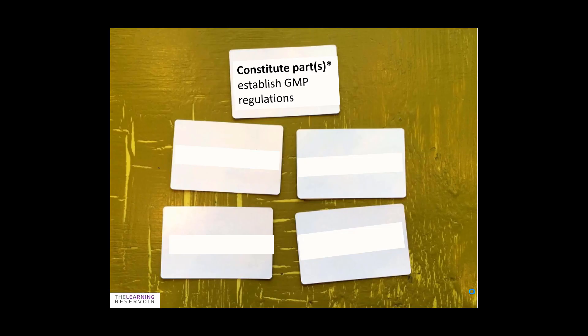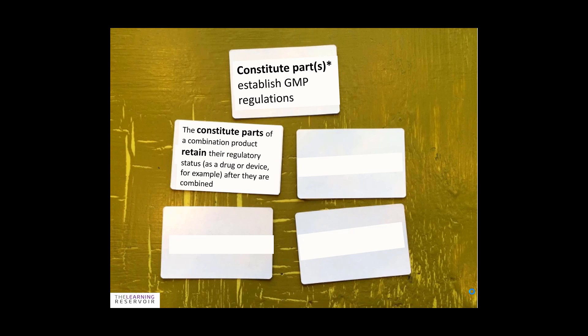The constituent part of the combination product establishes the GMP regulations. Even though it is a combination product, we must know what combinations made up that product — what are the constituent parts that went into it. The constituent parts of a combination retain their regulatory status as a drug or device after they are combined.